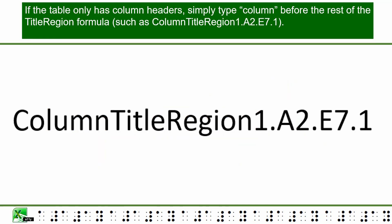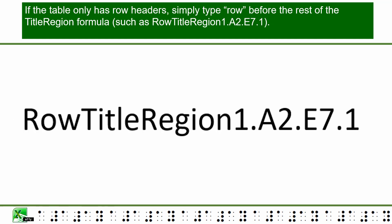If the table only has column headers, simply type 'Column' before the rest of the title region formula, such as: ColumnTitleRegion.1.A2.E7.1. If the table only has row headers, simply type 'Row' before the rest of the formula, such as: RowTitleRegion.1.A2.E7.1.